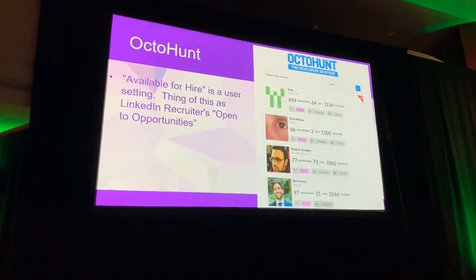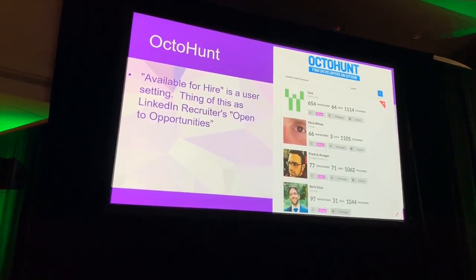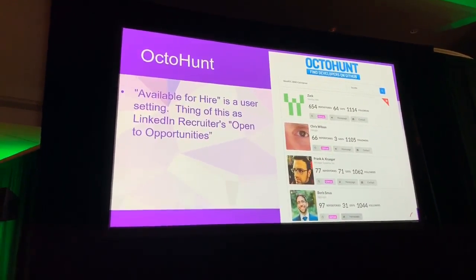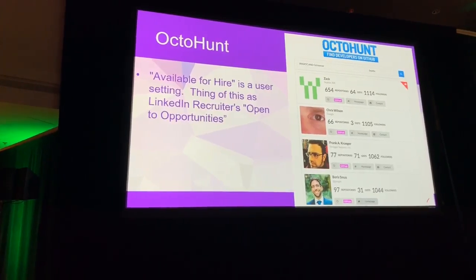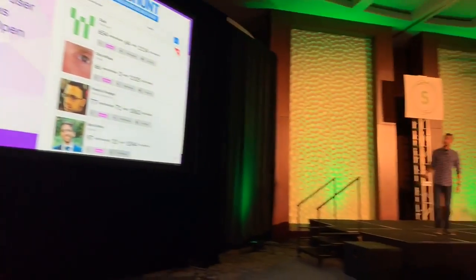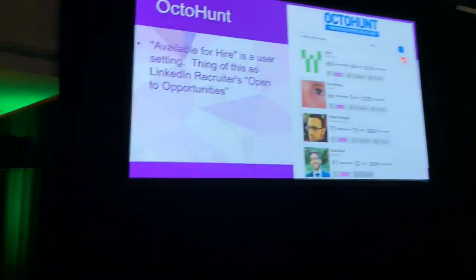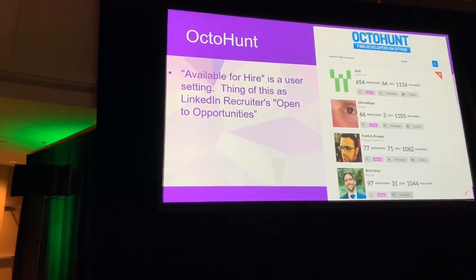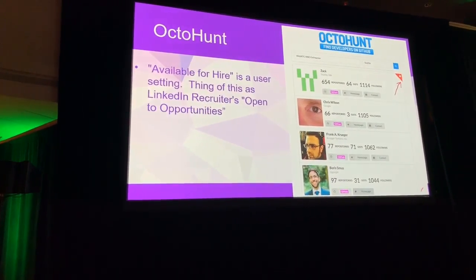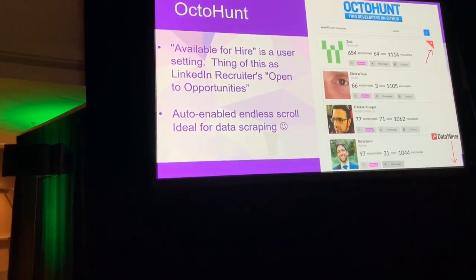Here's what OctoHunt looks like. This is just an example — I was looking for real-time communication, WebRTC, GStreamer, and related stuff. These are your results. Up in the top bar, it shows the search bar where you can build a Boolean string and search by location. You'll also see that little suitcase icon — it's something called Available for Hire, very similar to LinkedIn's Open for New Opportunities. It has auto-scrolling too, so for those of us into data scraping, it makes it pretty easy to do so.